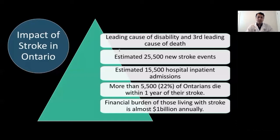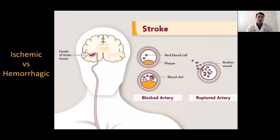This is the latest data from our province. Stroke is the leading cause of disability and the third leading cause of death. There are an estimated 25,000 new stroke events every year, which is equivalent to one stroke every 13 minutes. Out of these 25,000 patients, 15,000 require hospital admission, and approximately 20% of these patients die within one year of their stroke diagnosis. The financial burden is $1 billion in annual cost.